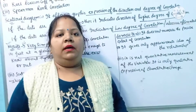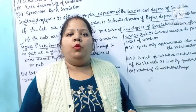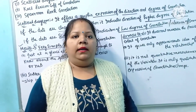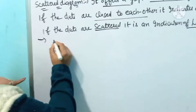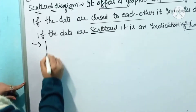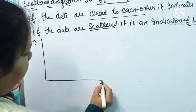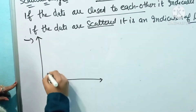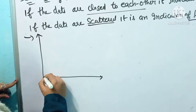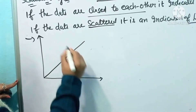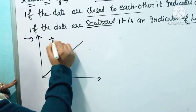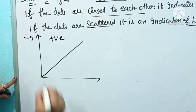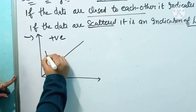Now I will show you different diagrams so you can understand what the direction is within a scatter diagram. If our scatter diagram has a direction like this — going upward — then we call this perfect positive correlation.